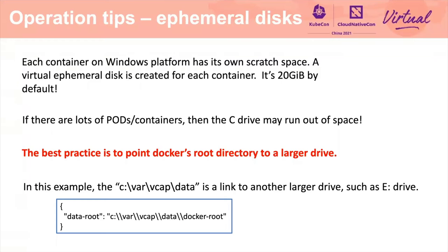The first tip is about the ephemeral disk. Each container on the Windows platform has its own scratch space, and a virtual ephemeral disk is created for each container — it's 20 gigabytes by default. Usually, the root directory for a container runtime is located on the C drive by default. So if there are a lot of pods running on a Windows node, the C drive may run out of space. The OS files are on the C drive as well, so the C drive is important for the Windows OS to operate correctly. We should avoid running out of space on the C drive.